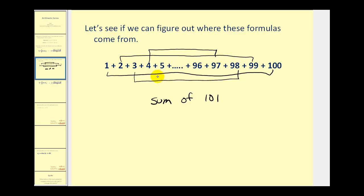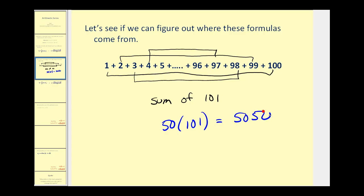The question becomes: how many 101's would we have? Well, if there are 100 terms and we're making groups of two, that will leave us with 50 groups of 101. So the sum of all of these terms would be 50 times 101, which is equal to 5050.